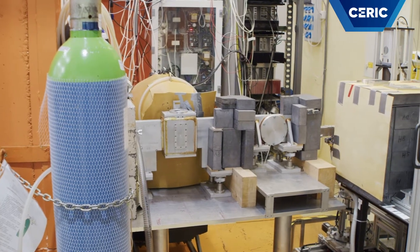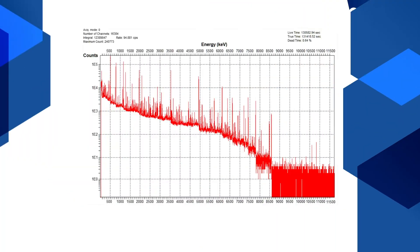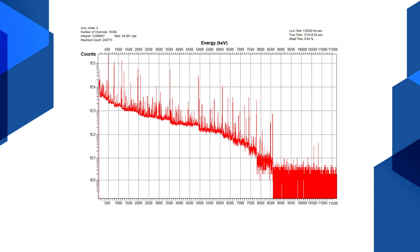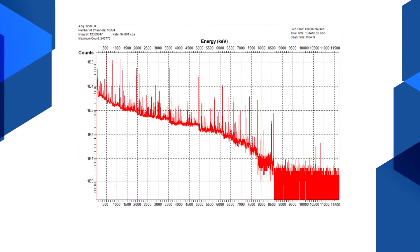With PGA, we collect a gamma spectrum where the energies of the peaks identify the elements, while their areas are proportional to their masses.